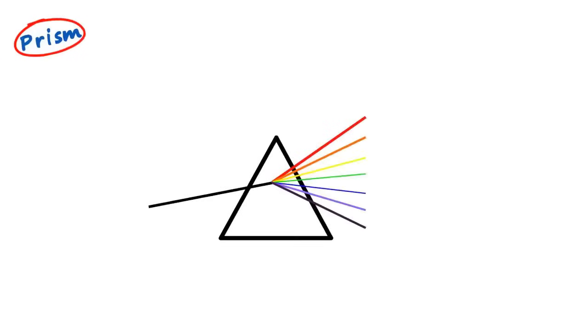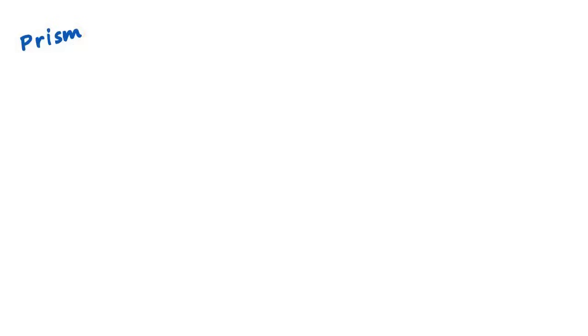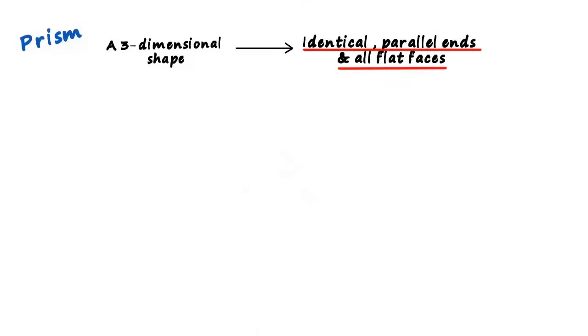Most people think of a prism as something like this, but have no idea about its correct definition. So let's erase this and start with the definition of a prism. It's a three-dimensional shape that has identical parallel ends and all flat faces.